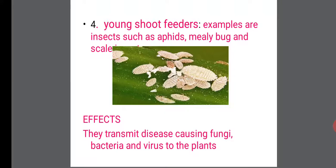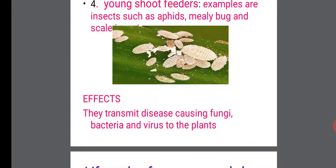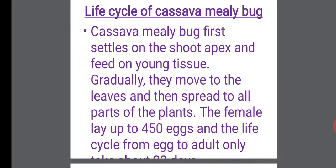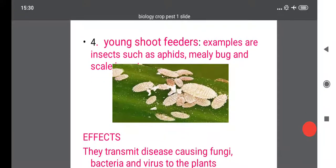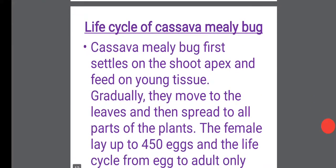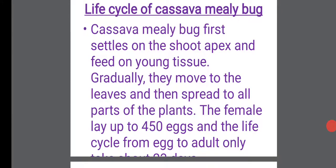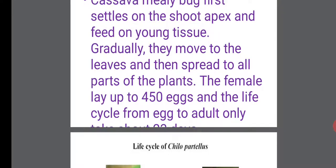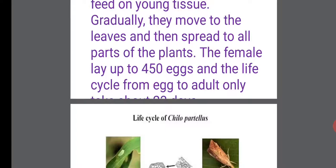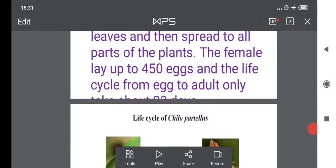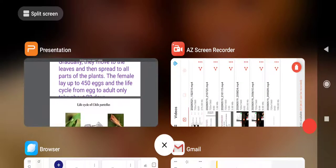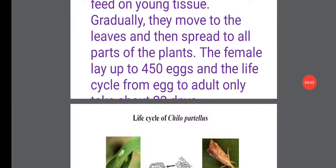The fourth group is the young shoot feeders. Examples are insects such as aphids, mealybugs, and scales. These young shoot feeders transmit disease-causing fungi, bacteria, and viruses to the plants. Life cycle of cassava mealybug: the cassava mealybug first settles on the shoot apex and feeds on young tissue. Gradually it moves to the leaves and then spreads to all parts of the plant. The female lays up to 450 eggs, and the life cycle from egg to adult only takes about 23 days.